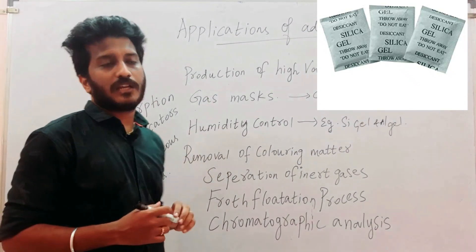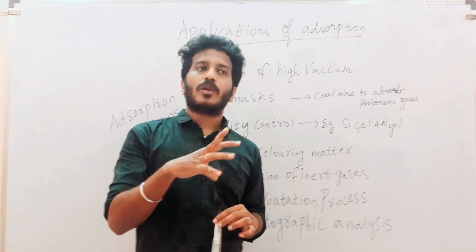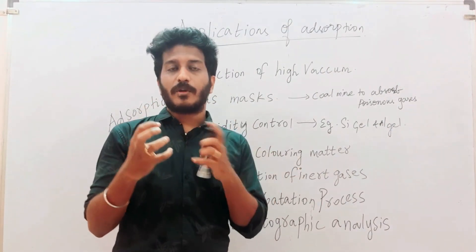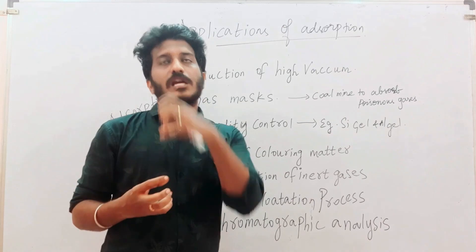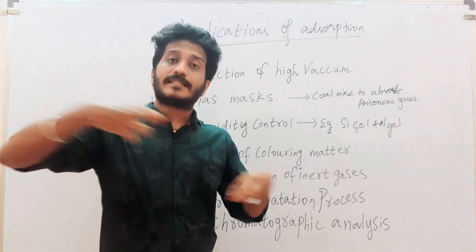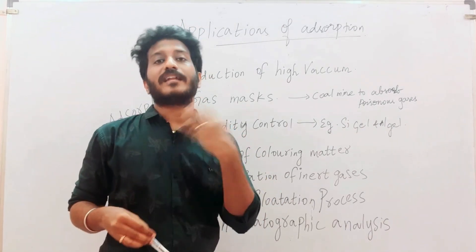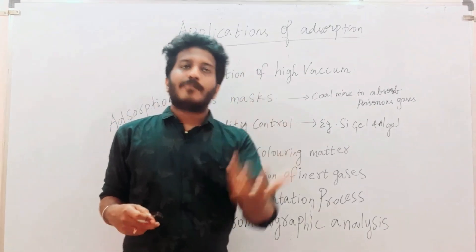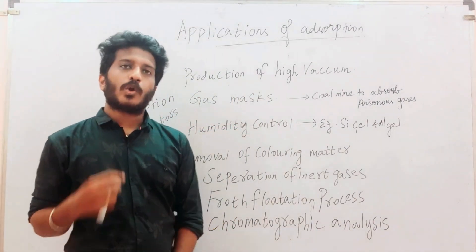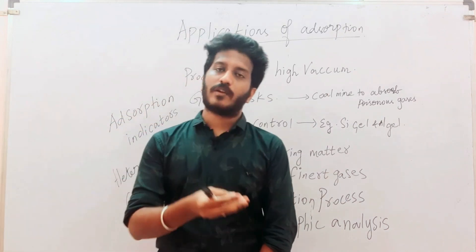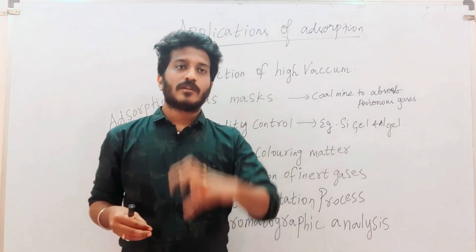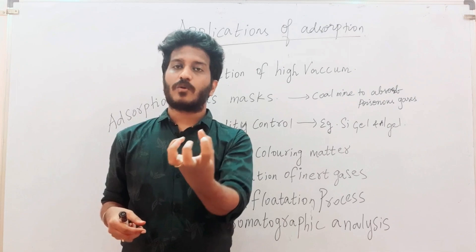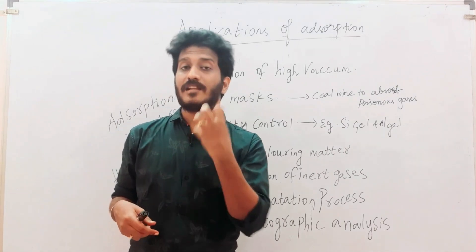The third application is removal of coloring matter. If there is an unwanted color in any product, we can remove that color using animal charcoal. Charcoal has the capacity to adsorb the coloring matter. So if you are doing a reaction in the lab and there is an unwanted color, you can add a little charcoal — it acts as an adsorbent and removes the color.